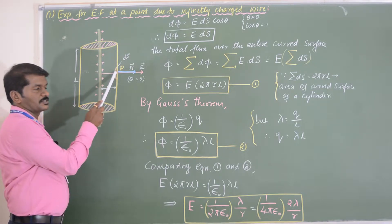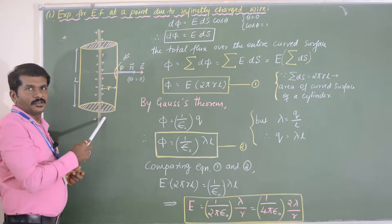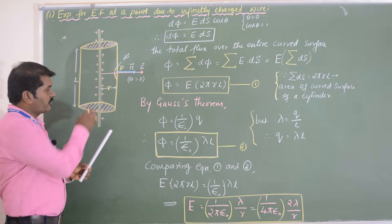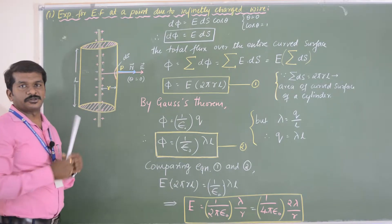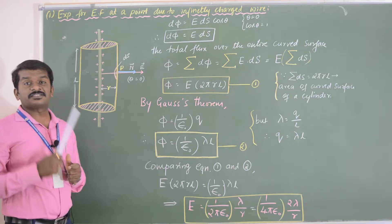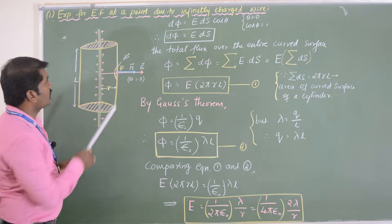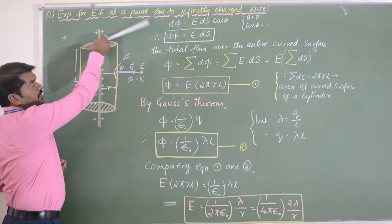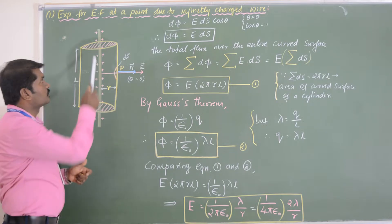Our intention is to find the electric field intensity at point P using Gauss theorem. The total flux over the cylindrical Gaussian surface can be split into flux through the circular flat ends and flux through the curved surface. The electric flux through the circular ends is equal to zero, because the electric field and the normal component are perpendicular to each other — theta equals 90°, so cos theta equals zero.